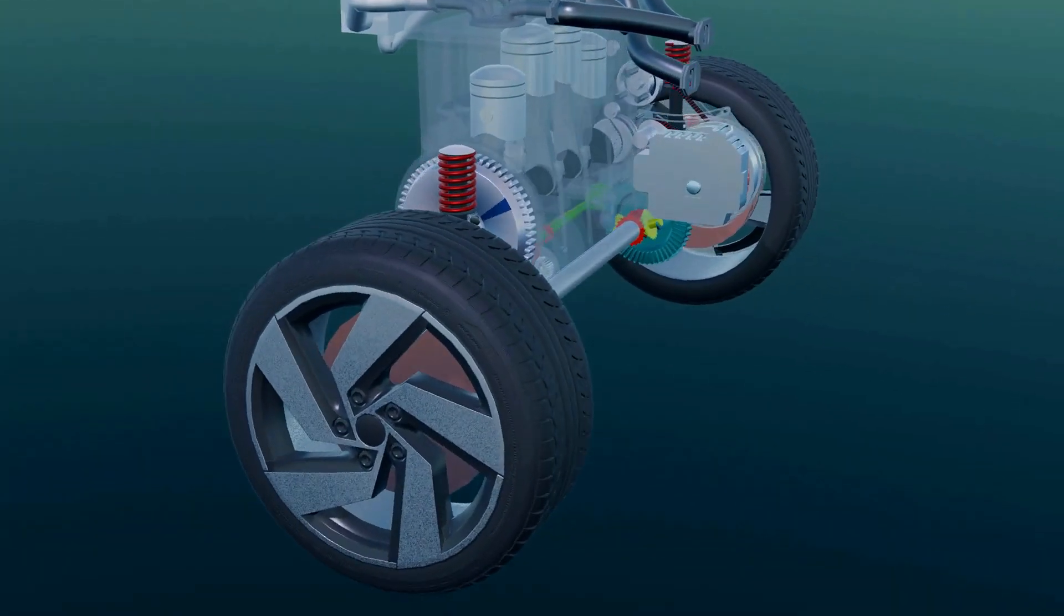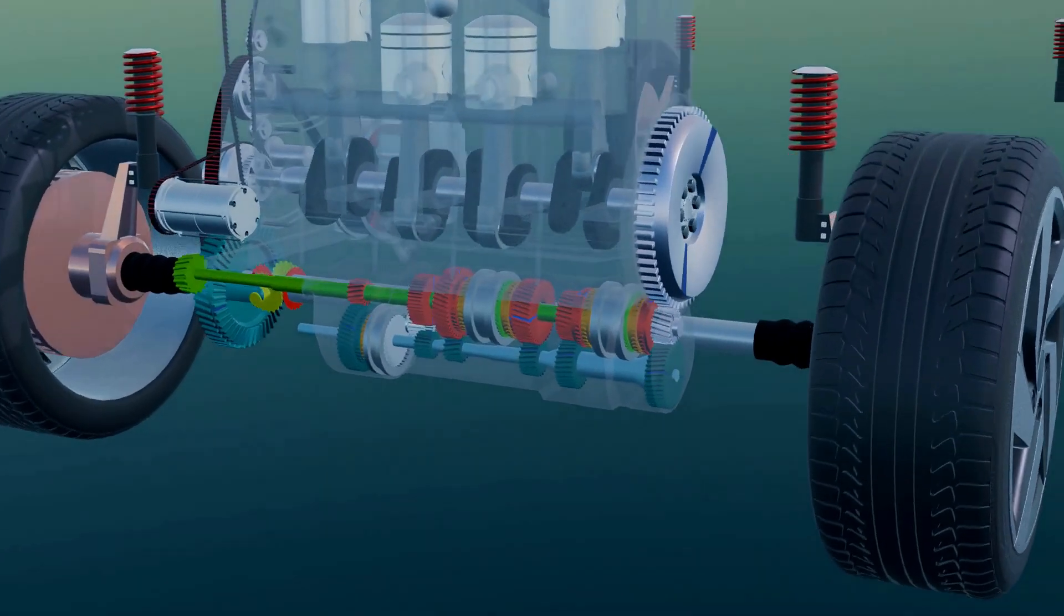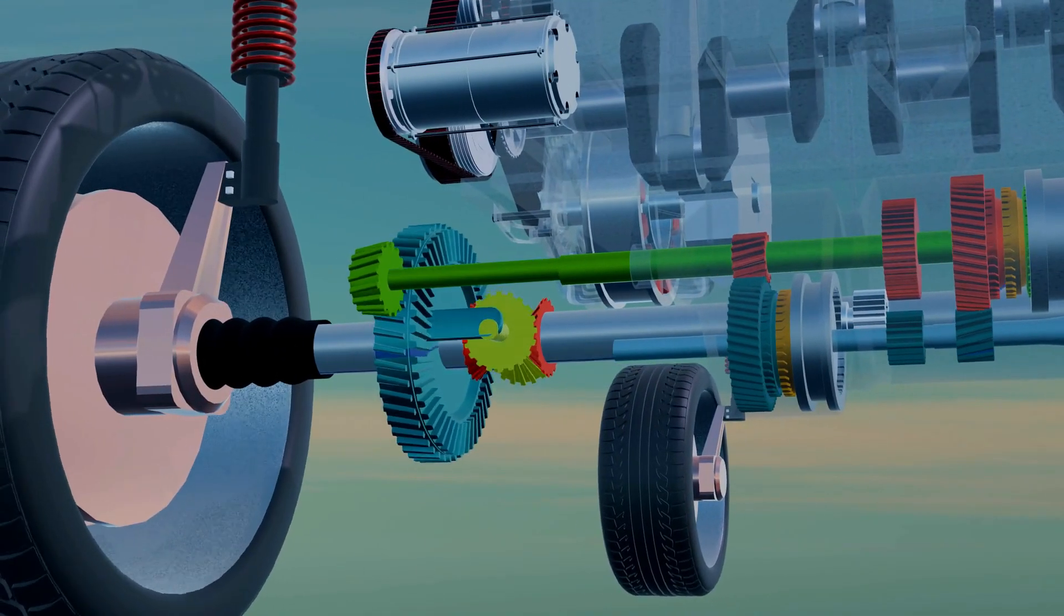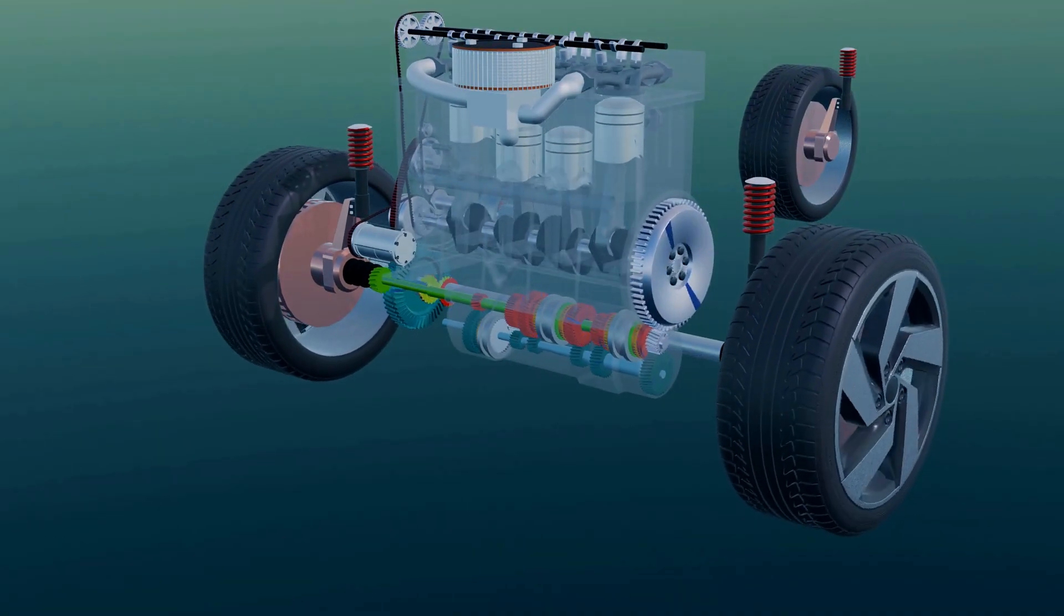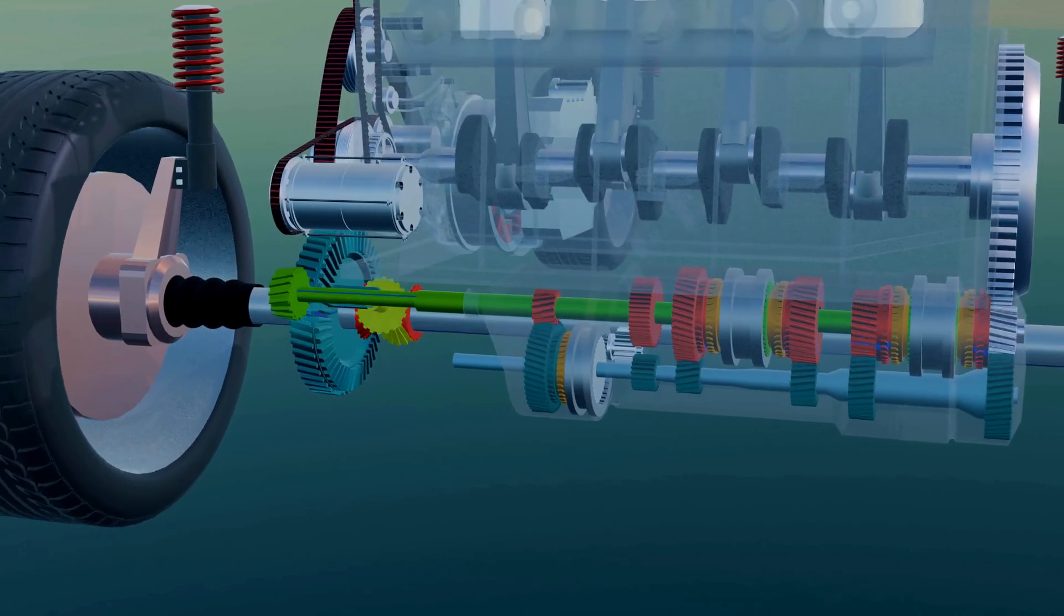This led to the development of front-wheel drive, or FWD. In this system, the transmission and differential are directly attached to the engine, and together they send power to both front wheels. Here, the transmission, differential, and axle are combined into a single unit called a transaxle.